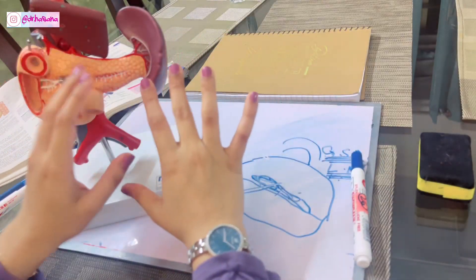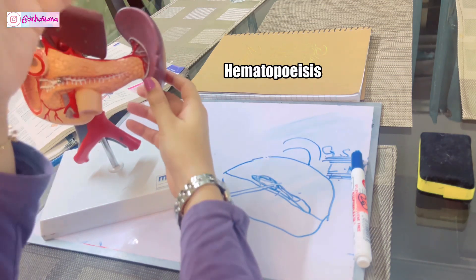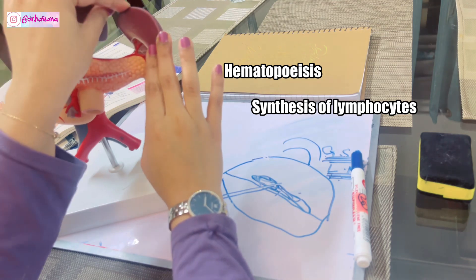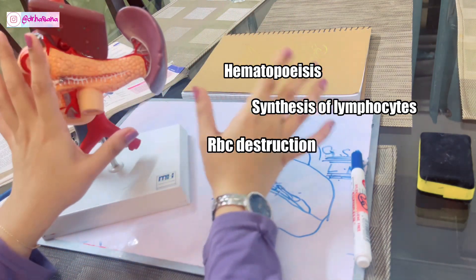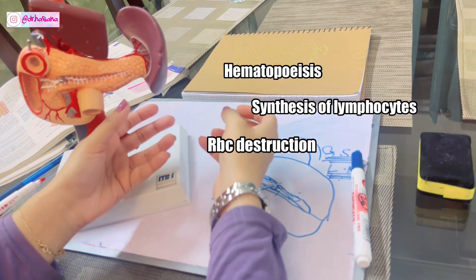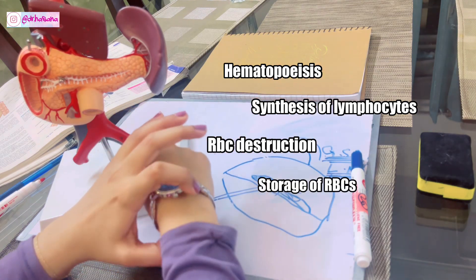The functions of the spleen are quite simple. During intrauterine life, this was the organ which actually synthesized blood. However, after intrauterine life, it synthesizes lymphocytes. Spleen is very important for destroying RBCs. Any defective RBCs are destroyed in the spleen because it has the ability to do phagocytosis. Also, it can store the red blood cells.